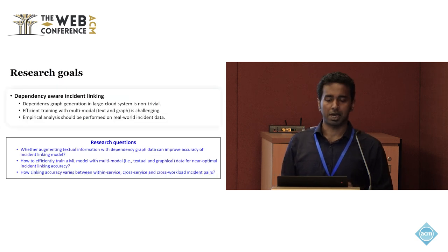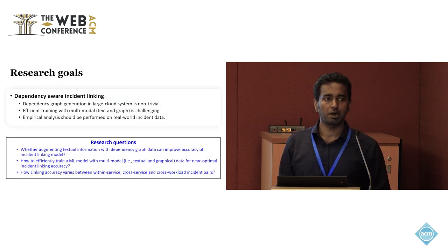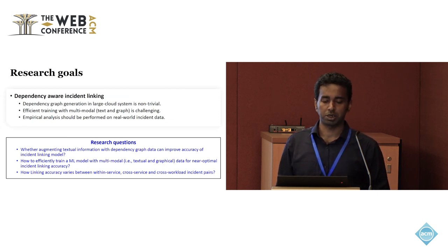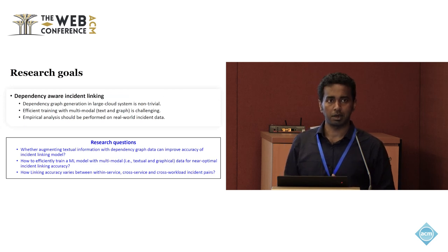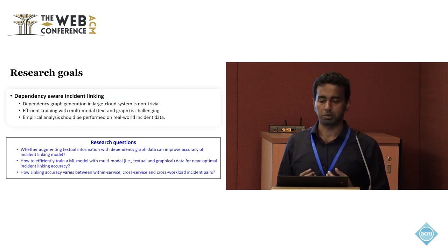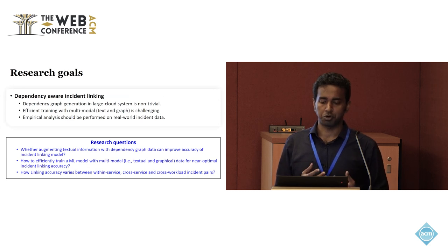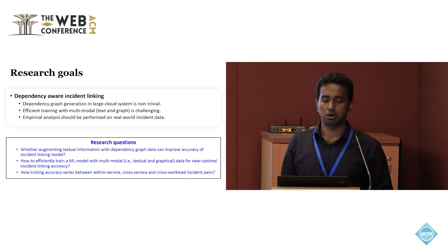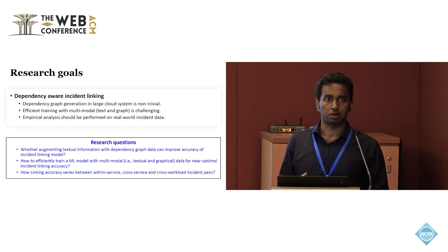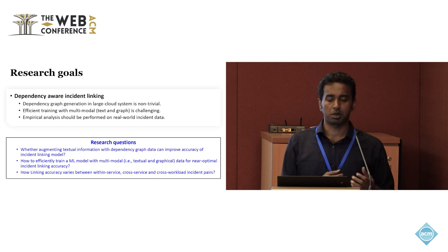This is a challenging task, and in this work we are primarily trying to address three research questions. First, how we can generate an efficient global dependency graph from large-scale cloud services and whether adding those dependency graphs can actually improve the accuracy of linking models. Secondly, how to efficiently combine textual and graphical information to train an efficient ML model. And thirdly, how the performance varies for similar incidents coming from the same services, different services, and different workloads.